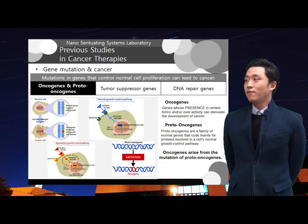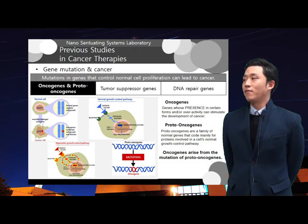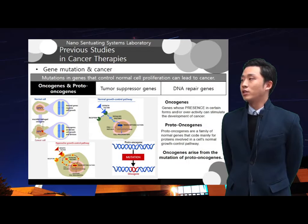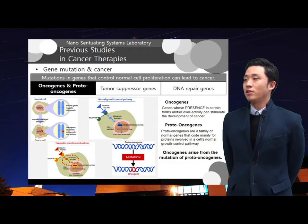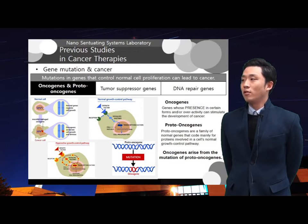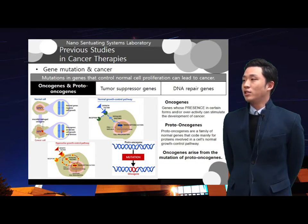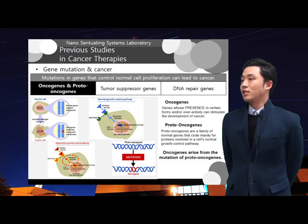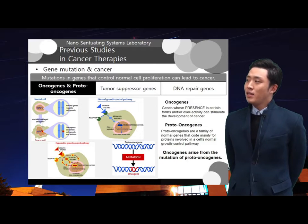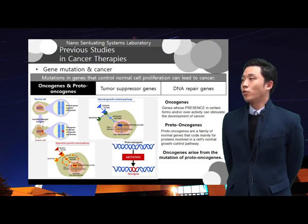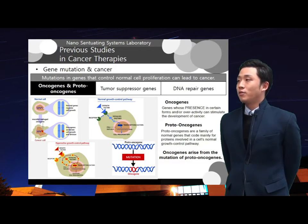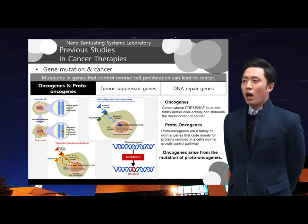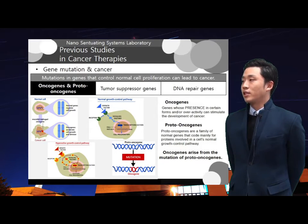Before introducing new candidates for targeting cancer, let's see how cancer therapies have evolved. It was found that mutations in genes which control normal cell proliferation can lead to cancer. The mutations that contribute to the development of cancer affect three general classes of genes. First are oncogenes — genes whose presence in certain forms and overactivity can stimulate the development of cancer. In many cases, oncogenes arise from the mutation of proto-oncogenes, and they code for an altered version of growth control proteins, thereby disrupting a cell's growth signaling pathway.